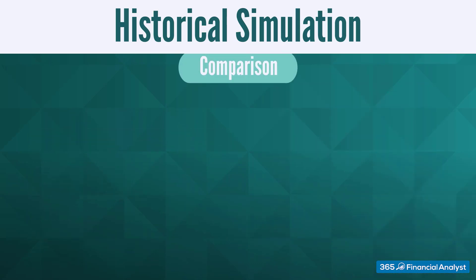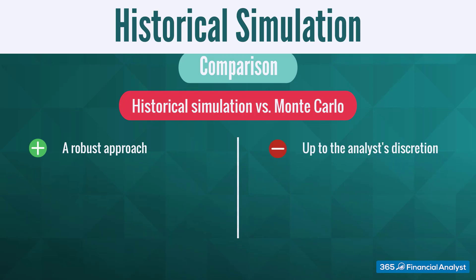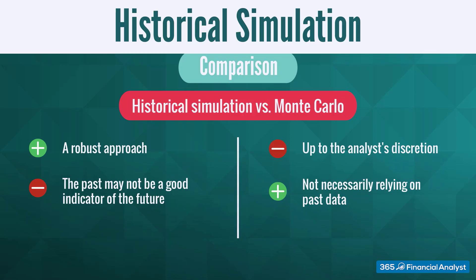In terms of advantages and disadvantages of the two methods, on the positive side, using past data means that we are applying a more robust approach — it isn't up to the analyst's discretion to assume a specific type of distribution. However, the downside is that what occurred in the past may not be a good indicator of what will happen in the future.